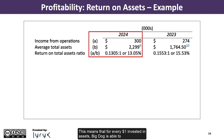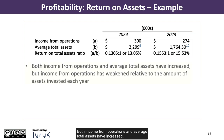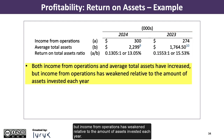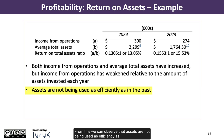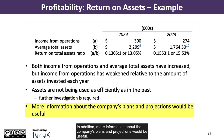This means that for every $1 invested in assets, Big Dog is able to generate $0.135 in operating income. For 2023, the ROA was 15.53%. Both income from operations and average total assets have increased, but income from operations has weakened relative to the amount of assets invested each year. From this, we can observe that assets are not being used as efficiently as in the past, so further investigation is required. In addition, more information about the company's plans and projections would be useful.